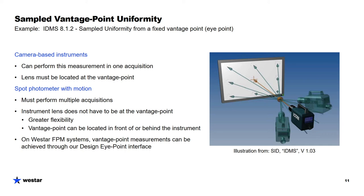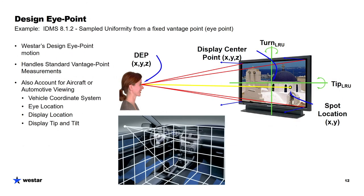On our FPM systems, we do vantage point measurements with a coordinate system we call Design Eye Point. The Design Eye Point interface handles a standard vantage point measurement where you can specify an eye position relative to the display, then put a measurement spot location anywhere on the display, and the viewing angle changes as you move across the display surface. We designed Design Eye Point with a few more variables to account for vehicular measurements for aircraft and automotive. It includes a universal vehicle coordinate system so you can locate the eye and the display in a fixed geometry, account for display tip and tilt, and measure from a driver or pilot's position and then do similar measurements at a co-pilot's or passenger's position to see how viewing performance changes.